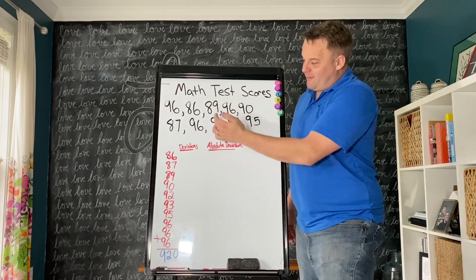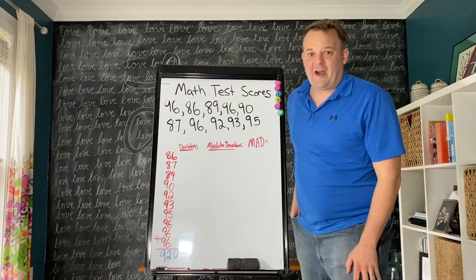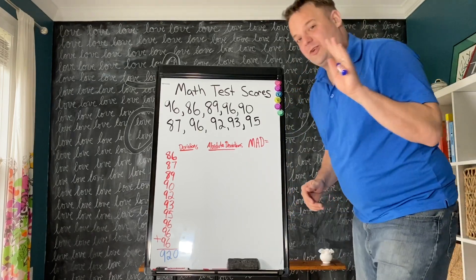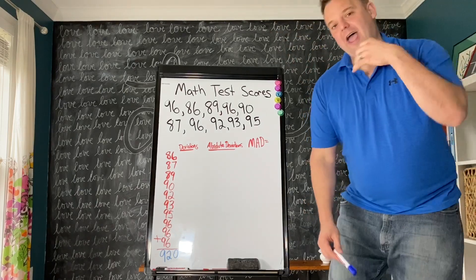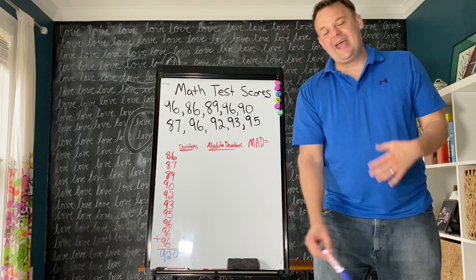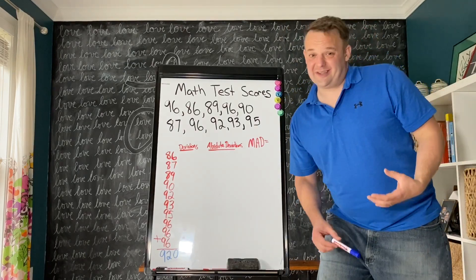We have 10 math test scores. The first thing we need to do when finding the MAD is add them up and find the mean. In order to find the mean, add them all up and divide by however many numbers are in the data set.